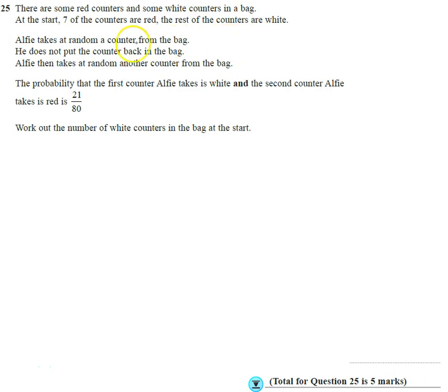Alfie takes a random counter from the bag. He does not put it back, so this is a dependent probability without replacement, and then he takes a second one. And we're told the probability equals white first and red second is 21 over 80.